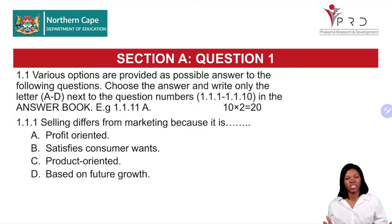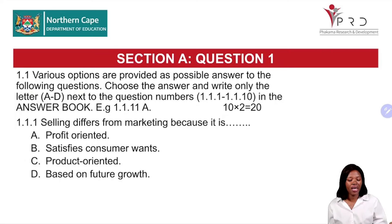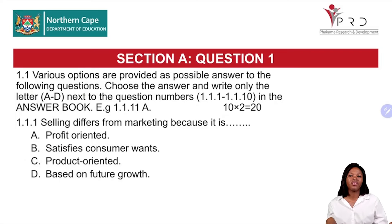Let us start with Section A. When answering multiple choice questions, first study, then read and analyze the statement or description. Various options are provided as possible answers. Choose the answer and write only the letter A to D next to the question numbers 1.1.1 to 1.1.10 in the answer book. We only have 10 questions in the multiple choice, and each question carries two marks.